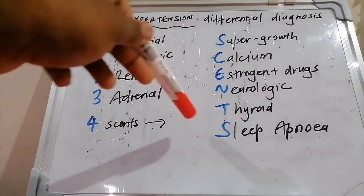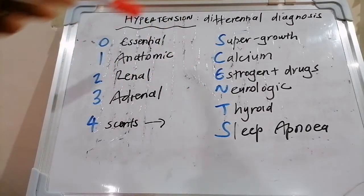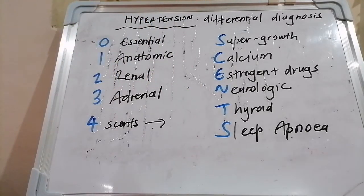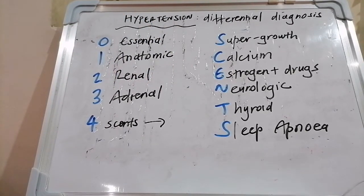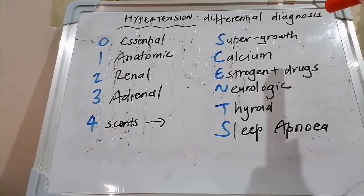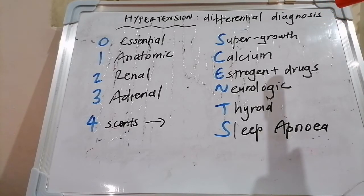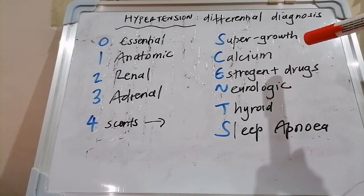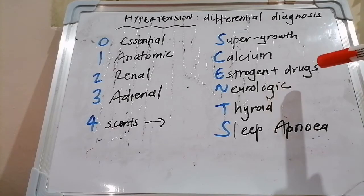Moving on to number four in the mnemonic, which is SCENTS. The S is for super growth — so acromegaly can also cause hypertension. The C is for calcium in the context of hypercalcemia, especially hyperparathyroidism.